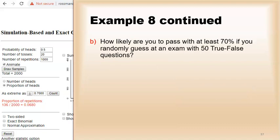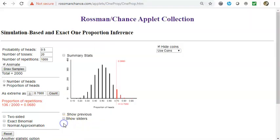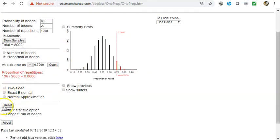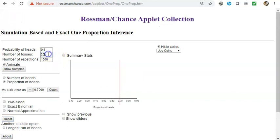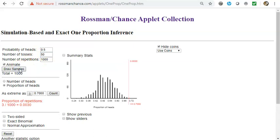Suppose that, how likely are you to pass with 70 percent if you had 50 true-false questions? So let's go ahead and reset this. Reset. There we go. And now let's make it 50 questions. And you can see that it happened three out of a thousand times, so even less likely than it was with just 20 questions.